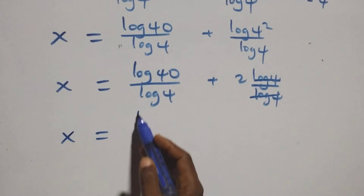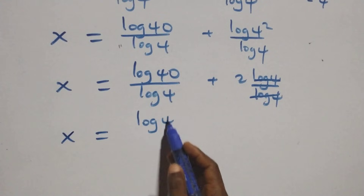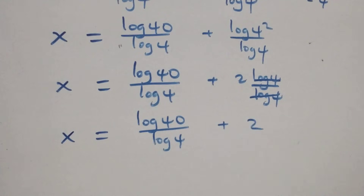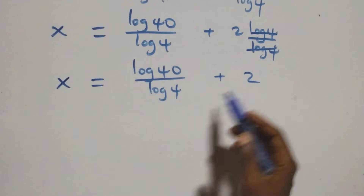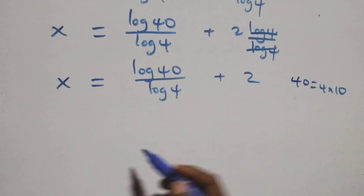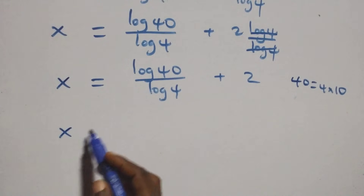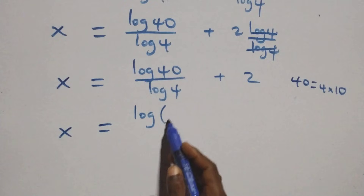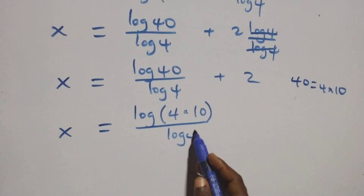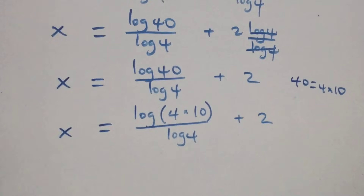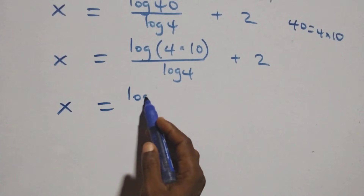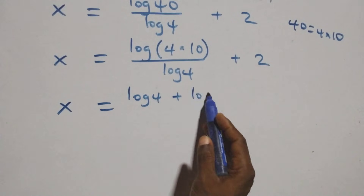So x equals log 40 over log 4 plus 2. We can also rewrite 40 as 4 times 10, so x equals log(4 times 10) over log 4 plus 2. Applying the product rule of logarithms, this becomes x equals log 4 plus log 10, all over log 4, plus 2.